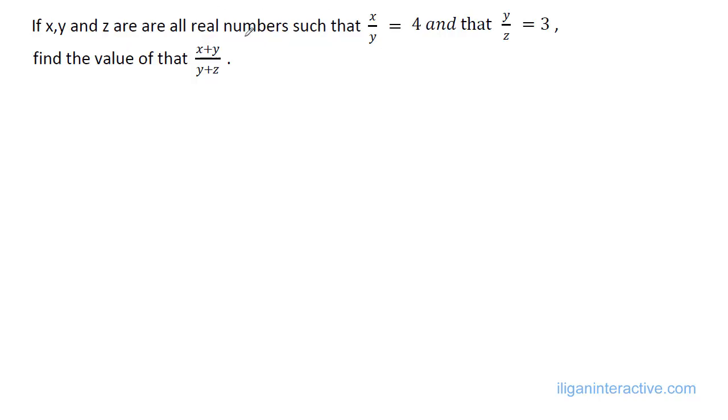If x, y, and z are all real numbers such that x over y is equal to 4 and that y over z is equal to 3, find the value of this expression: x plus y over y plus z.